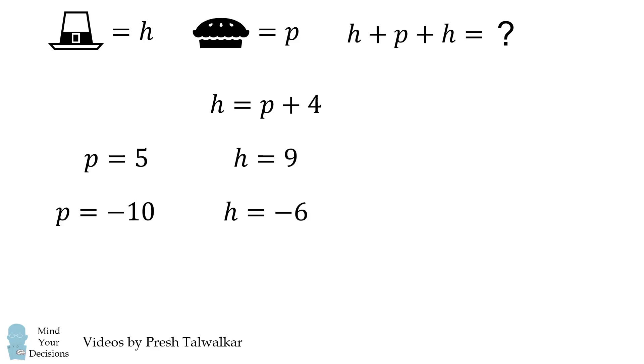We can now solve for the value of H plus P plus H. When P is 5 and H is 9, we get a value of 23. But when P is negative 10 and H is equal to negative 6, we get a value of negative 22.